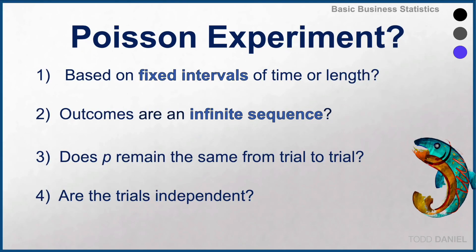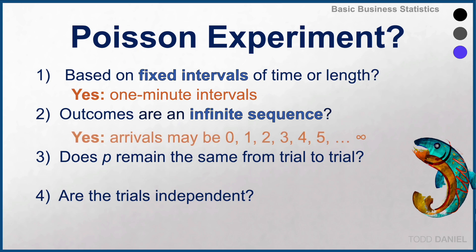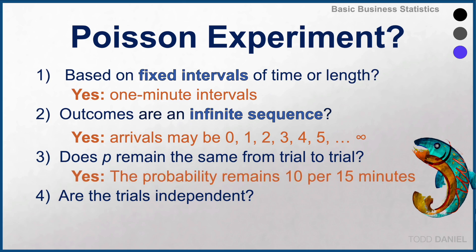Let's find out. Is it based on fixed intervals of time or length? Yes, we're using 15-minute intervals. Are the outcomes an infinite sequence? Yes, the number of arrivals at the shore could be zero, one, two, three, four, five, theoretically up to infinity. Does the probability remain the same from trial to trial? Yes, the probability remains the same at 10 per 15 minutes on average. And are the trials independent? Assuming the randomness of death in the real world, yes, the arrival of souls would be independent.